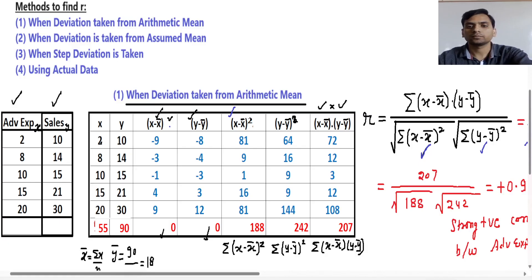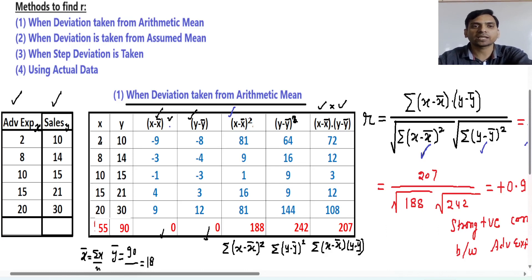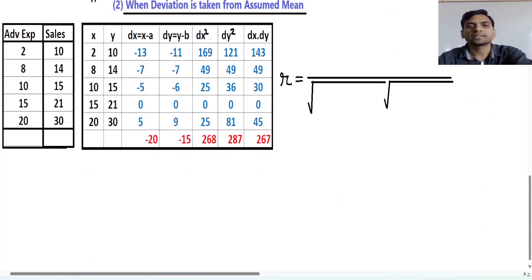Hello everyone. In the last lecture, I taught how to find the Karl Pearson coefficient of correlation by taking deviation from the arithmetic mean. Now in this lecture, we will see how to find the Karl Pearson coefficient of correlation by taking deviation from the assumed mean. There are four methods. The first is when deviation is taken from the arithmetic mean, and the second is when deviation is taken from the assumed mean. So we are studying the second method.